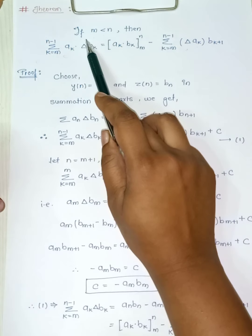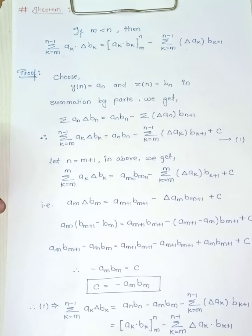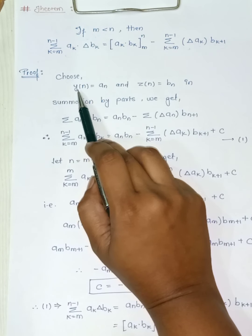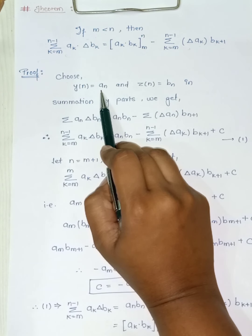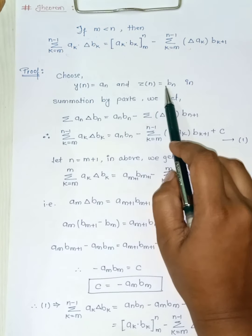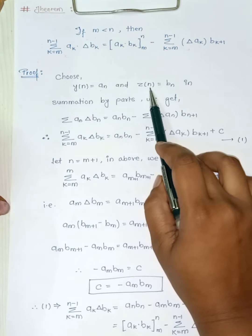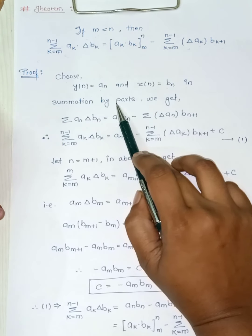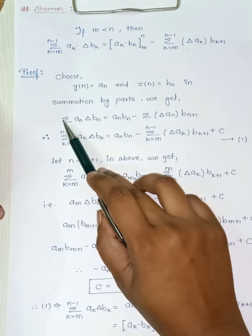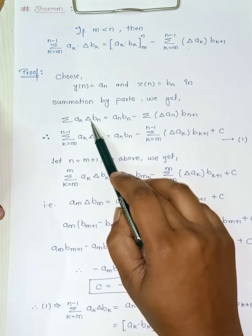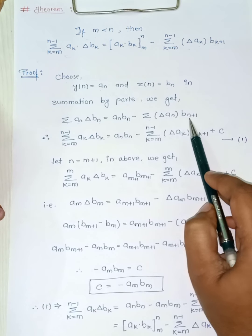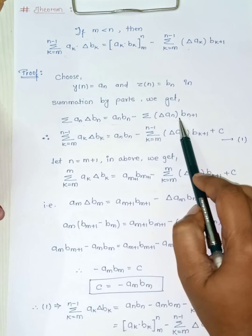We have to prove this for m less than n. We will choose y(n) equals a_n and z(n) equals b_n, and then consider the given a_n and b_n in our equation.